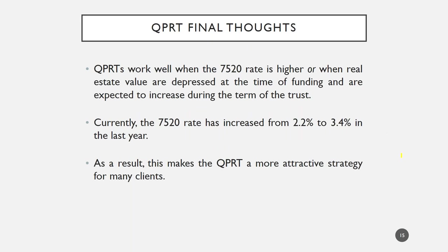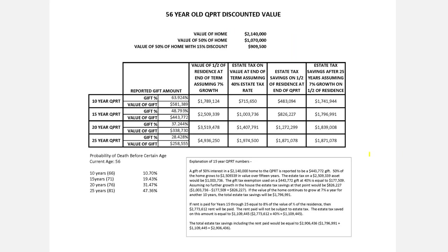A couple of final thoughts on QPRTs: when the Section 7520 rate is higher, or when real estate values are depressed at the time of funding and expected to increase during the term, that's when QPRTs work well. Right now the 7520 rate is going up — it's increased from 2.2% to 3.4% in the last year. When the 7520 rate is higher, the present value of the retained term is deemed higher, which means the remainder interest is smaller, which means a smaller taxable gift when forming the QPRT. If you have real estate you expect to appreciate, that makes it work especially well.